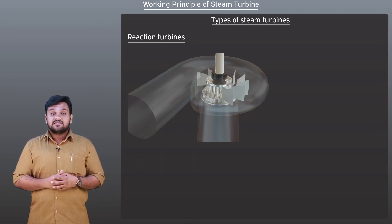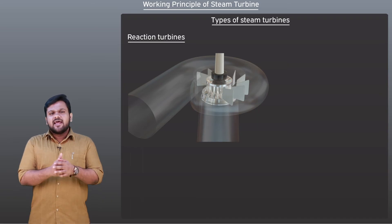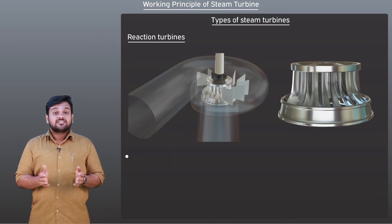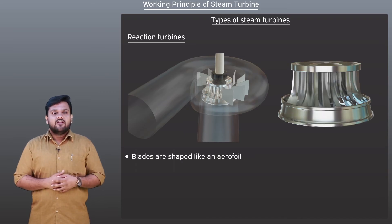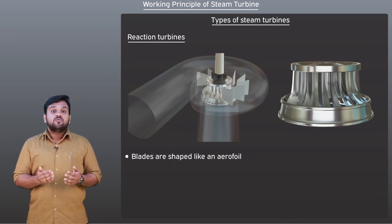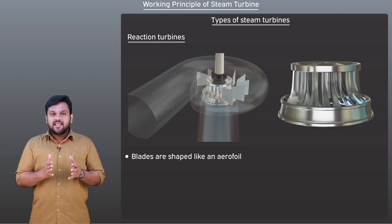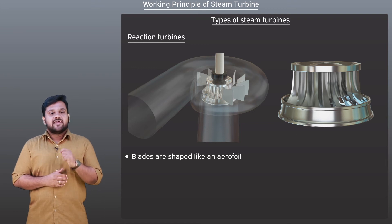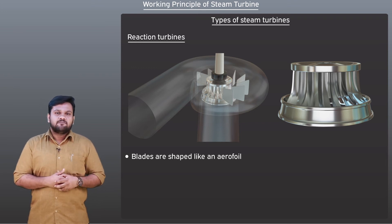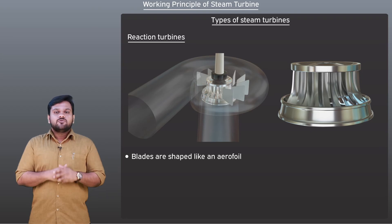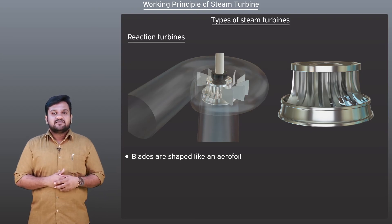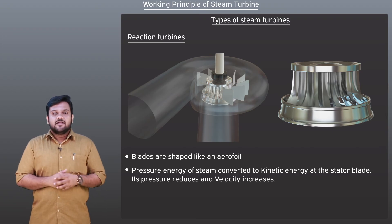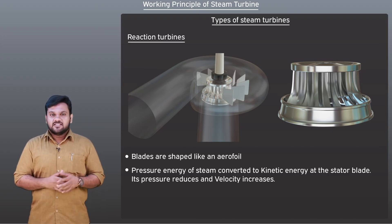A reaction turbine works a bit differently than an impulse turbine. The blades of a reaction turbine are shaped like an aerofoil with a slight bucket curve towards the end. Steam enters through a pipe, usually in a radial direction. A set of fixed blades guide the steam through a set of moving blades. The pressure energy of the steam is converted to kinetic energy at the stator blade, reducing its pressure and increasing its velocity.